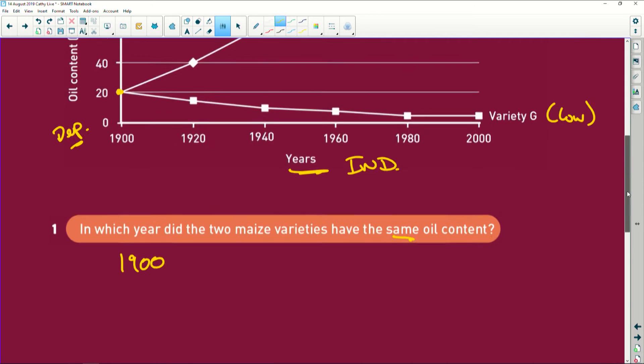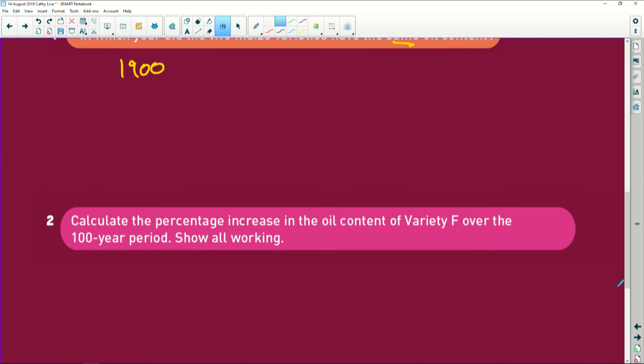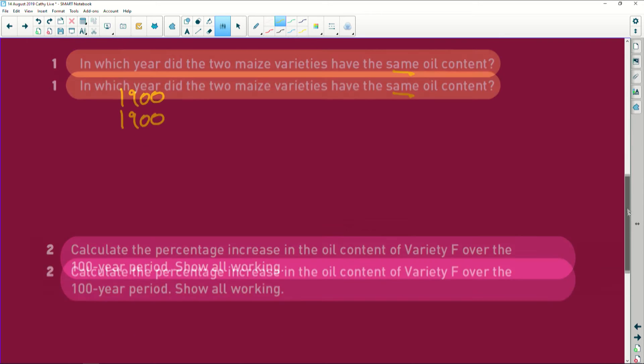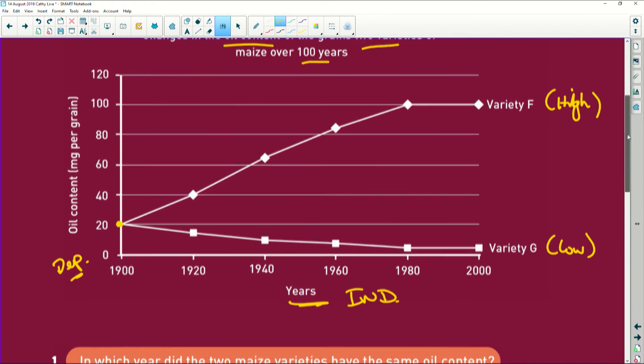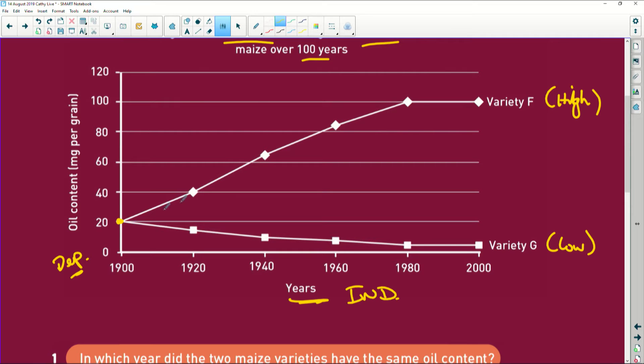Alright. Let's, next question. Calculate the percentage increase in the oil content of variety F over a 100-year period. So let's look at variety F. I'm going to do it here next to us here. So it goes from 20 to 100. So 100 minus 20 is 80. Over the 20 here, that's its starting point, times 100 is equal to 400%. How did I get that? You cross the Northsouth, two divides into eight gives you four. Four times 100 is 400%.